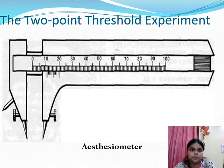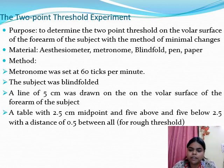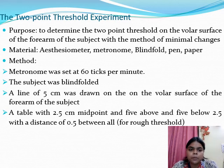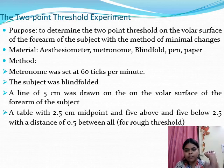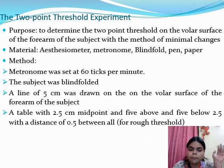The purpose of the two-point threshold practical is to determine the two-point thresholds on the volar surface of the forearm of the subject with the help of the method of minimal changes. Do not miss any term from this purpose statement. We have to draw a five-centimeter line on the volar surface of the forearm of the subject.